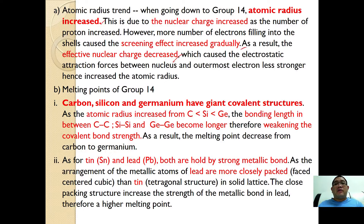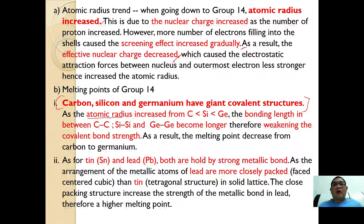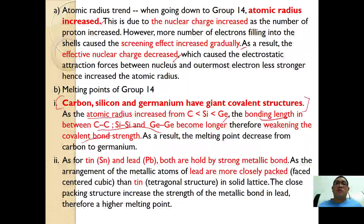For the melting point of group 14, carbon, silicon, and germanium all have a giant covalent structure. As atomic radius increases from carbon to silicon to germanium, the bond length between C-C, Si-Si, and Ge-Ge becomes longer, therefore weakening the covalent bond strength. As a result, less heat is required to break the weaker covalent bonds, so the melting point decreases.